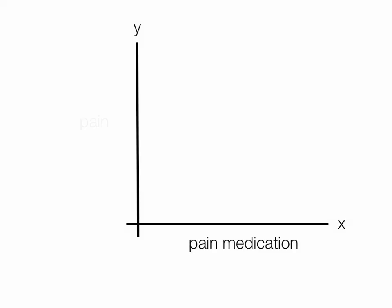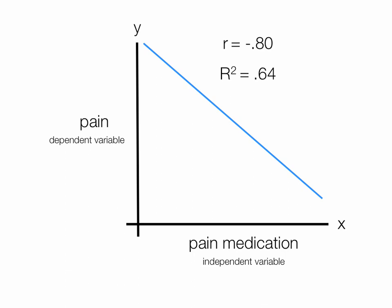So let's look at pain medication and pain. The independent variable would be pain medication. We're going to manipulate pain medication to see how it impacts pain. So the dependent variable is pain. Let's hope that the relationship looks something like this. In this case, we'll say R is equal to negative 0.80 or R squared is equal to 0.64.